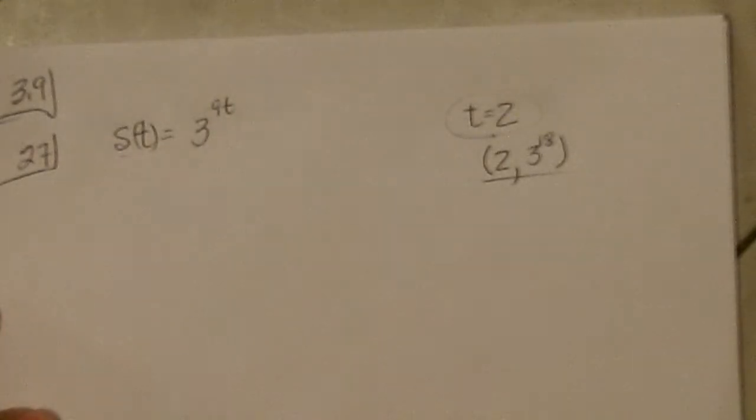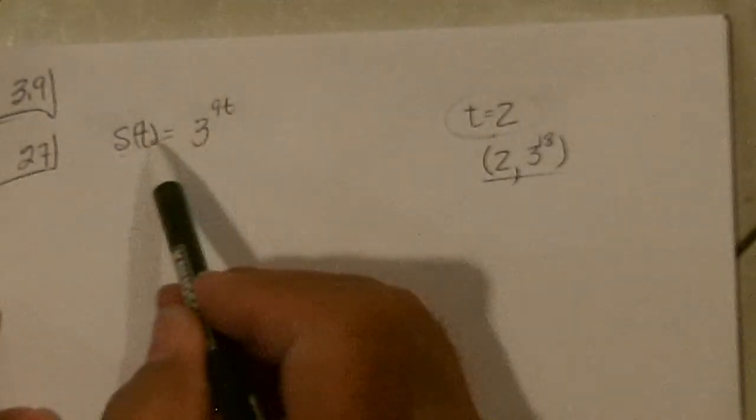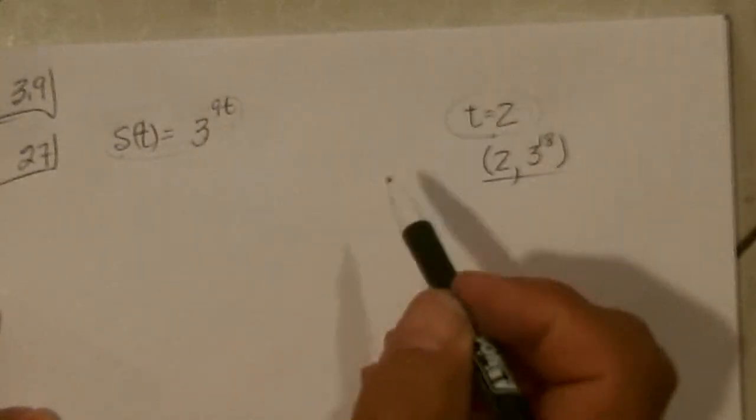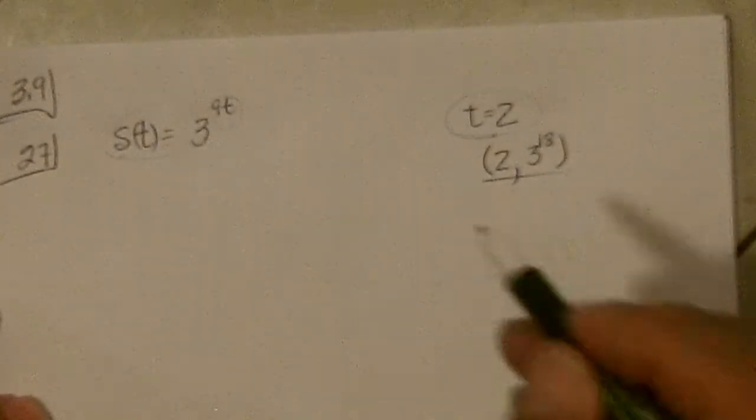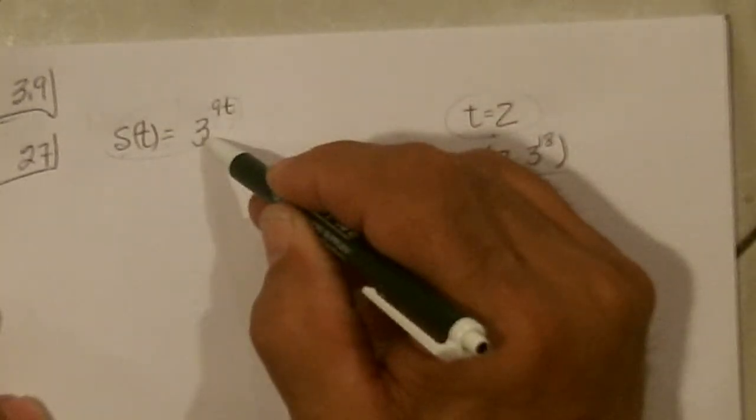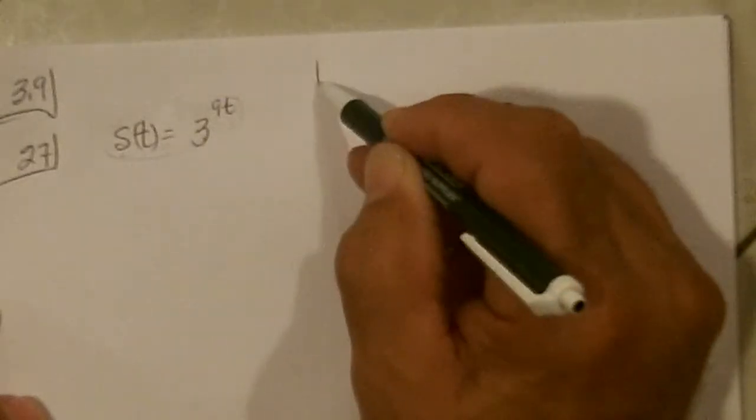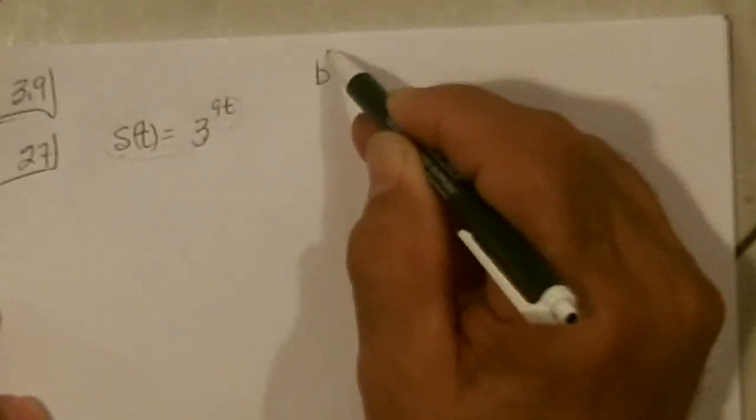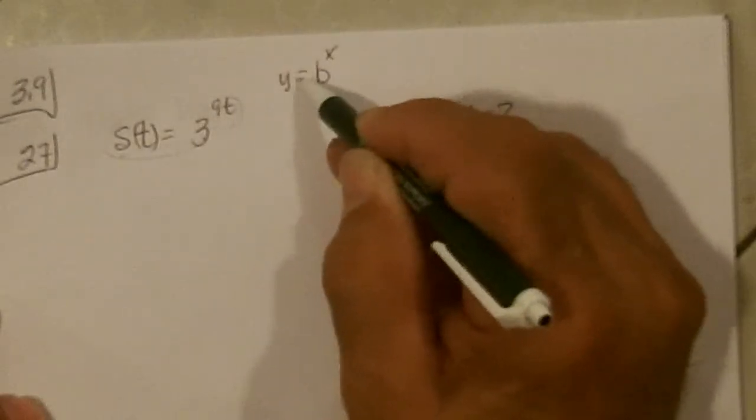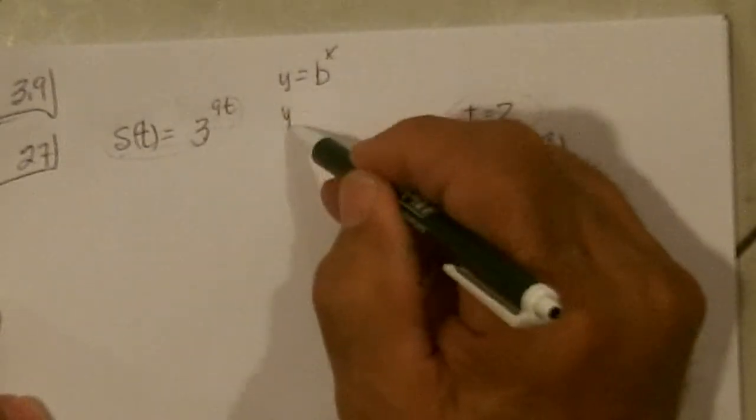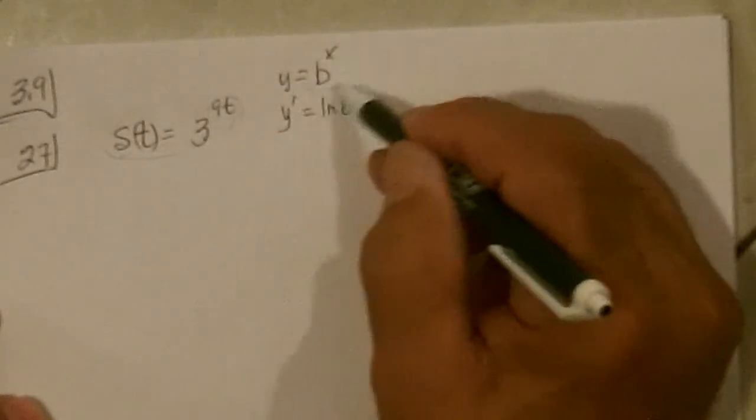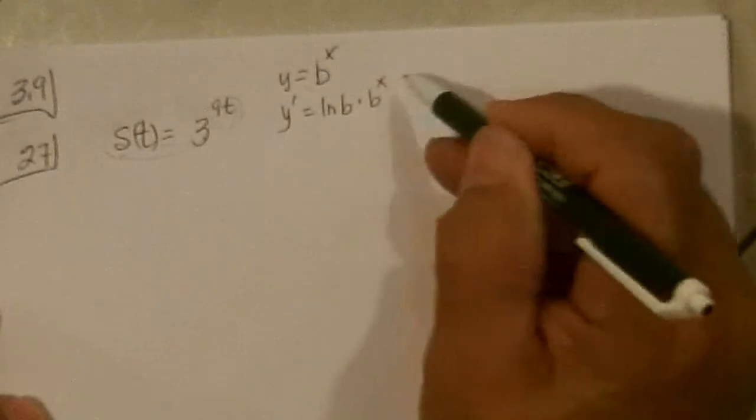Now we've got to find the derivative. To do the derivative of this with the base being 3, our base rule is that if it's not e, then if we have b to some x, the derivative of this is ln b times b to the x.